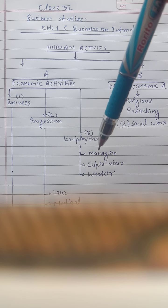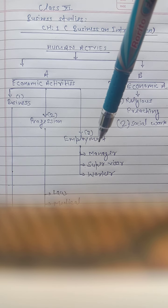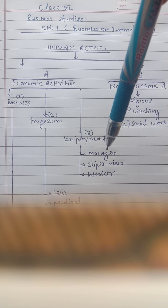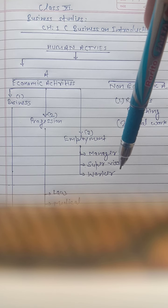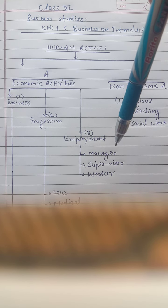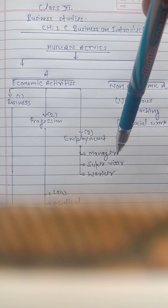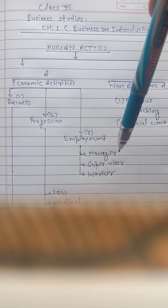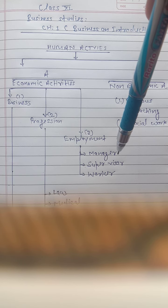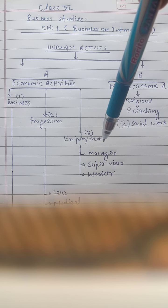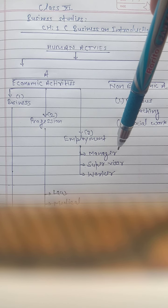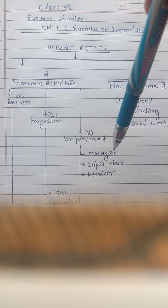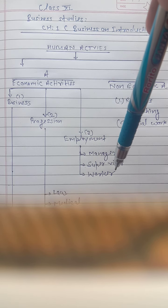Employment is the work that an employee is involved in — whether in a private office, government office, or factory. These are sources of employment where we get a salary or wages. Employment can be at different levels: manager, supervisor, or worker.